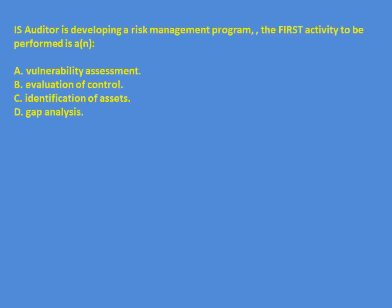Final question: An auditor is developing a risk management program. The first activity to be performed is — vulnerability assessment, control evaluation, identification of assets, or gap analysis. Referring back to the six steps — business environment first, then assets — the answer is identification of assets.